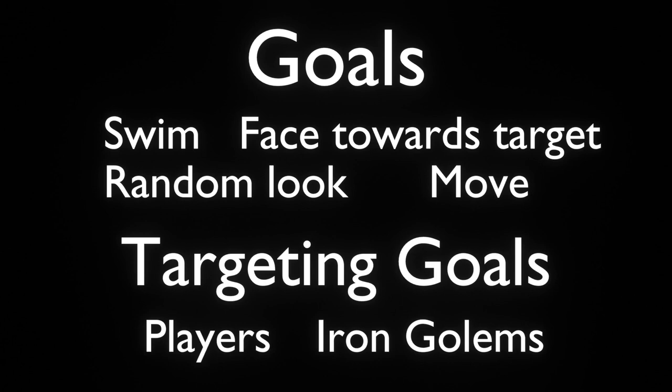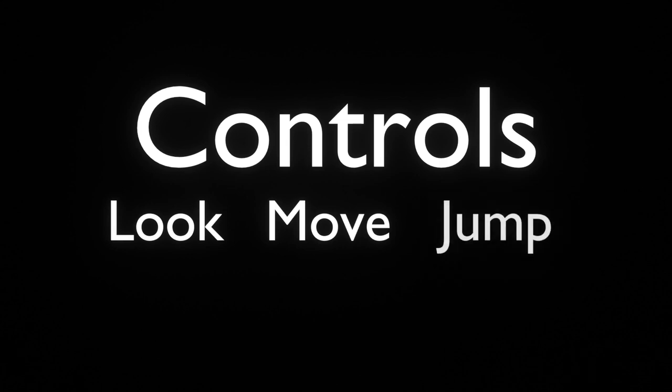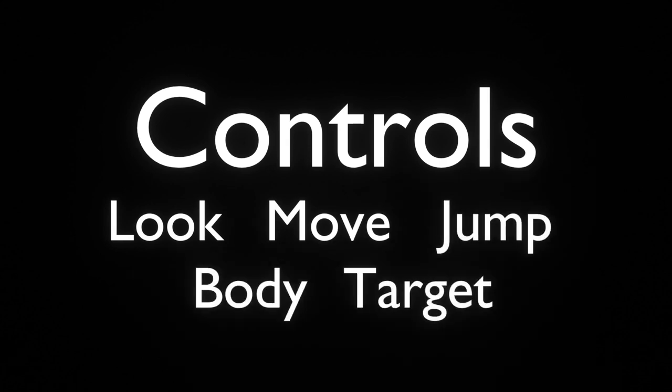A goal in the entity AI system is a task that can be performed, possibly based on some controls. Controls are the system by which goals control an entity. All mob entities have a look control, a move control, a jump control, a body control, and a target control. What these controls do should be fairly self-evident by their names. The look control controls where the entity is looking, the move control controls its movement, the jump control controls whether or not it is jumping, the body control controls how its body looks, and the target control controls what mob it's targeting currently.